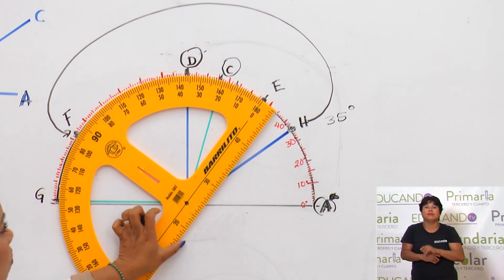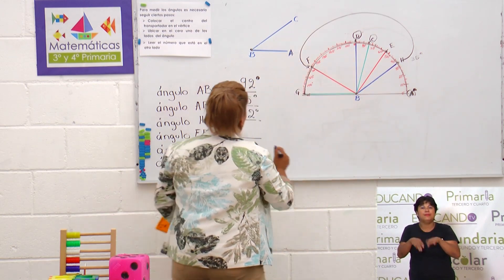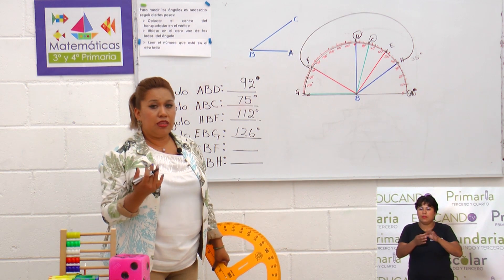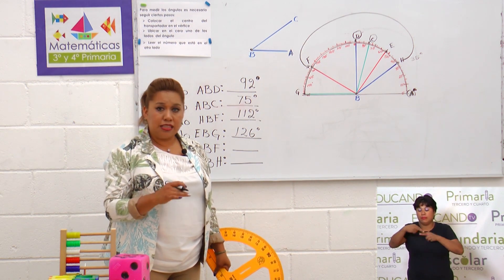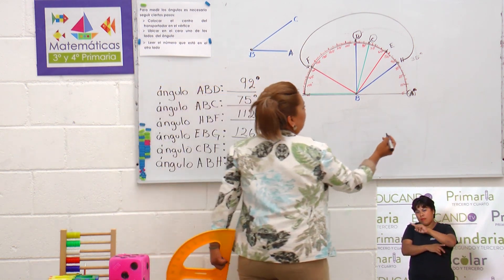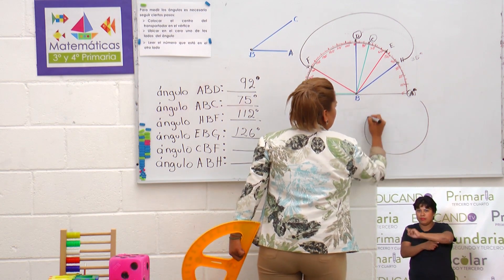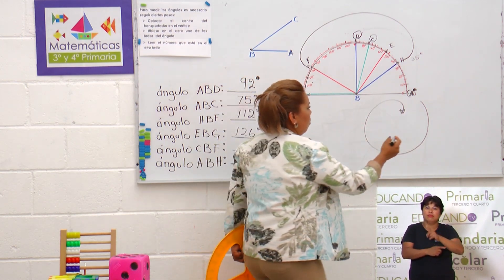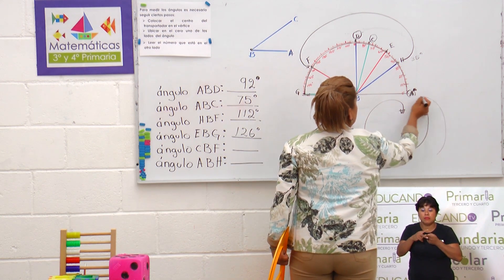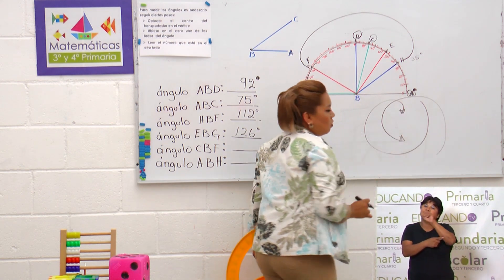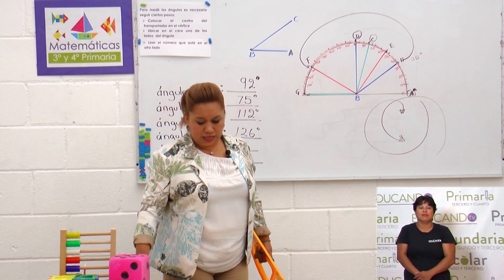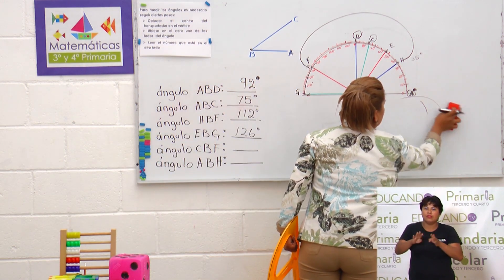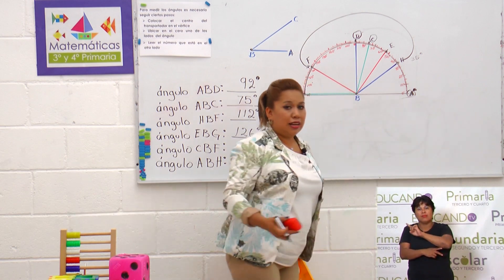Hace un rato yo te decía que los ángulos se miren en sentido contrario a las manecillas del reloj. Y date cuenta, una manecilla del reloj normalmente gira hacia acá, ¿verdad? Para contar un ángulo, ¿cómo le hacemos? En sentido contrario. Por eso te decía hace un rato que los ángulos se miren en sentido contrario a las manecillas del reloj.